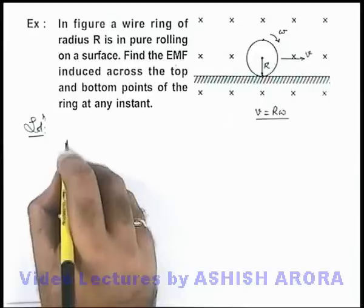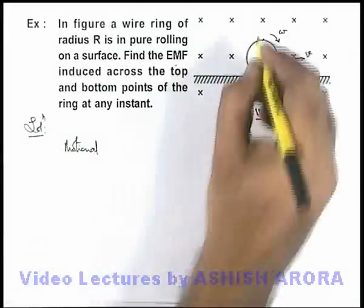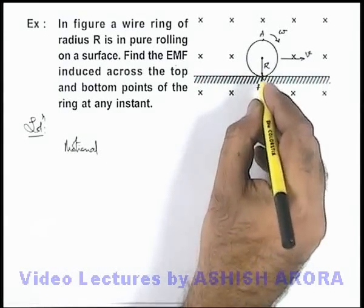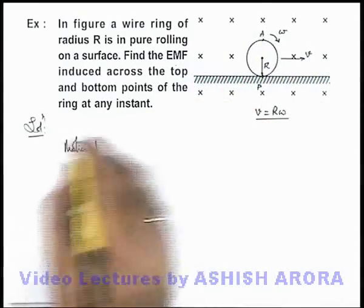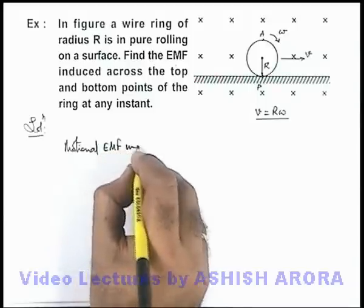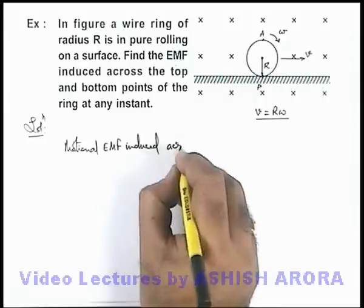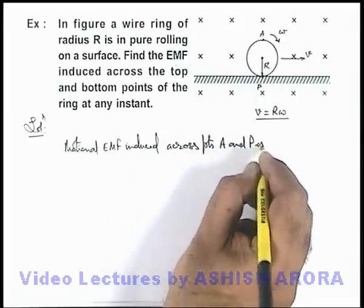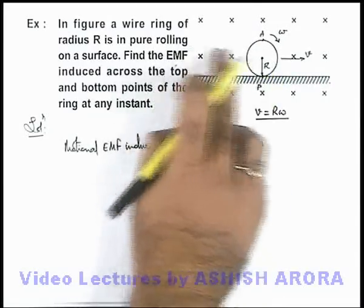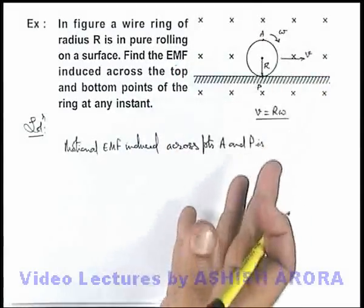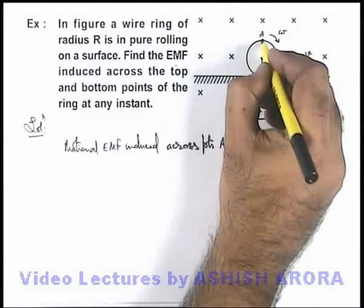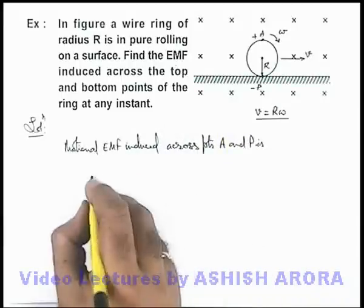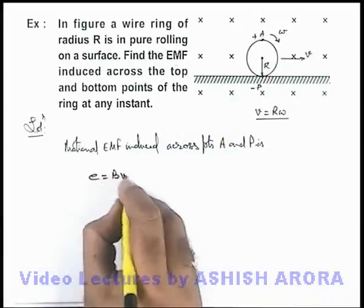So we can directly write the motional EMF. Say if these points are A and P — P is the bottom most point and A is the top most point — we can write the motional EMF induced across points A and P. Here we can see as the free electrons of the wire are moving toward right, they will experience magnetic force in the downward direction, so the top most point will be the high potential point and the bottom most one will be the low potential point.